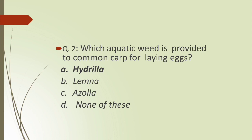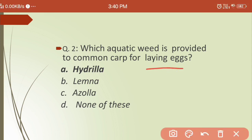Second question: which aquatic weed is provided to common carp for laying eggs? Options are: (a) Hydra, (b) Lemna, (c) Azolla, (d) none of these. The answer is Hydra, because common carp eggs are very sticky in nature and need an aquatic weed to hold them. Lemna and Azolla are just floating aquatic weeds and are not suitable.